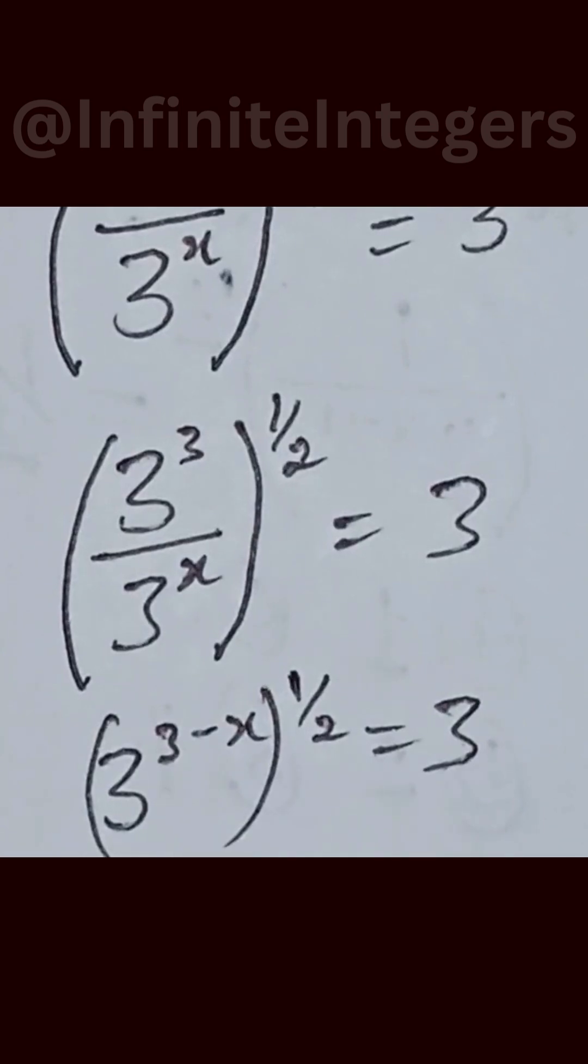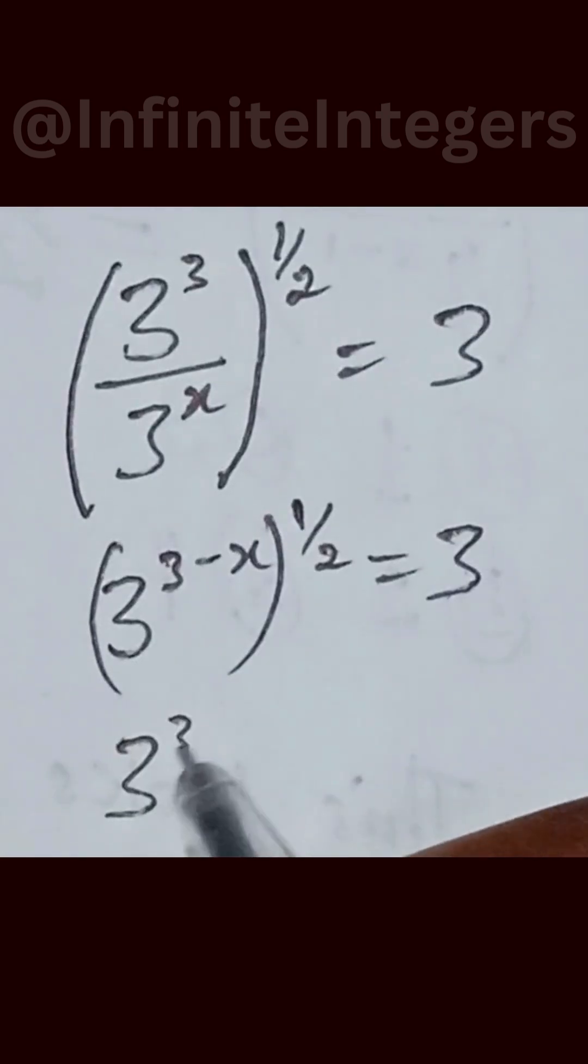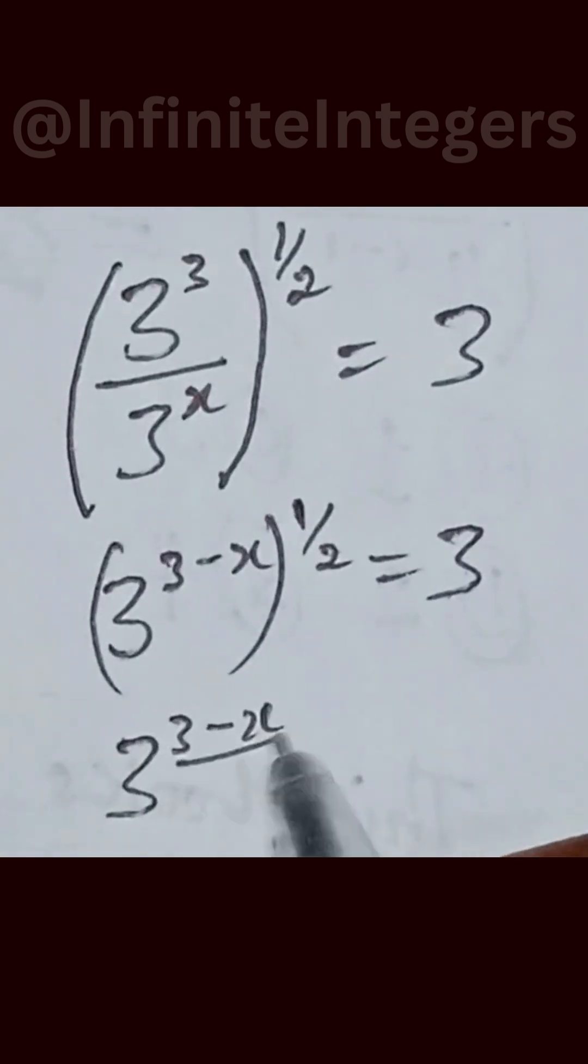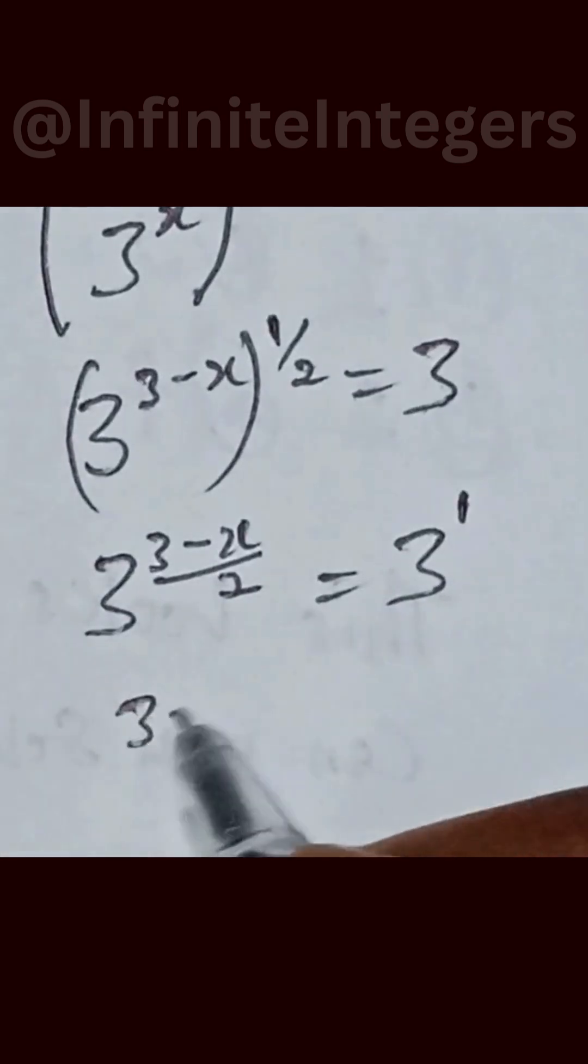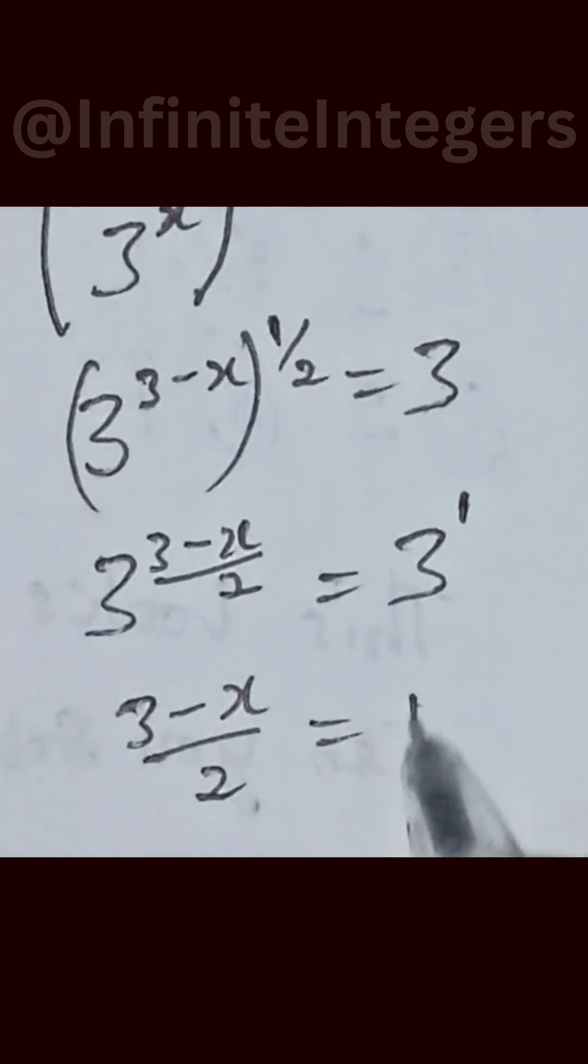Then we multiply this. We have 3 raised to the power 3 minus x over 2 equal to 3. Then we have 3 raised to the power 1. So we have the base to be the same now. We have 3 minus x over 2 then equal to 1.